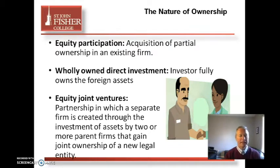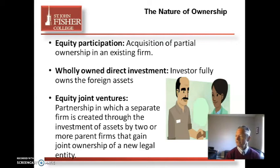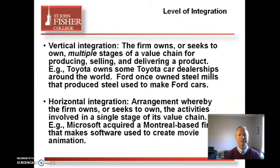Generally speaking, if you're a huge MNE like GE, you don't want to share any ownership, so you do a wholly owned direct investment. Sometimes, though, you want a joint venture. Saturn and GM did a joint venture; Chrysler and Daimler was actually a merger — the DaimlerChrysler. Another joint venture was Mitsubishi and Chrysler with the Spider car. And NexPress was a joint venture between Heidelberg Press and Kodak.